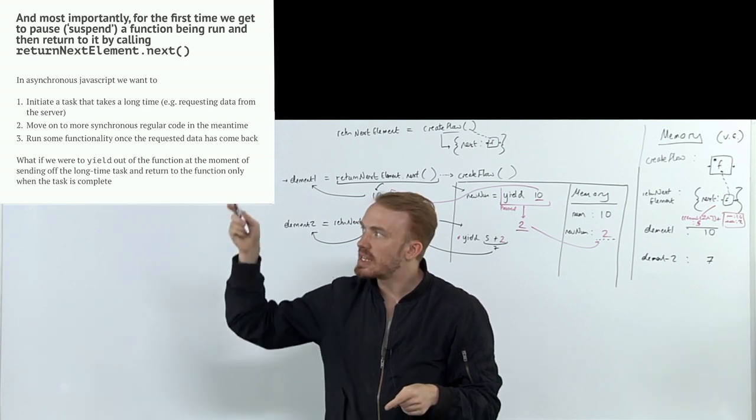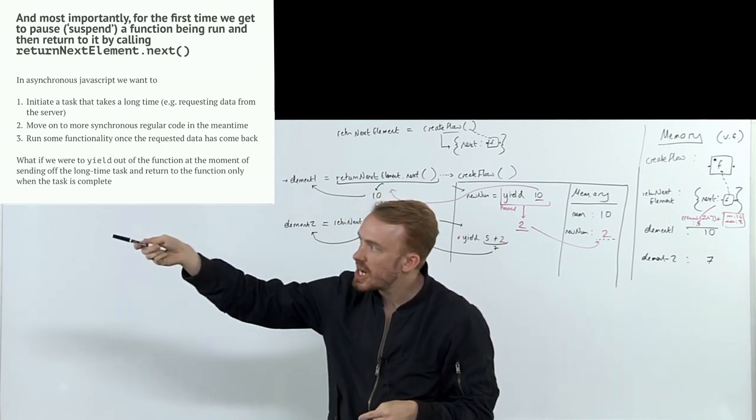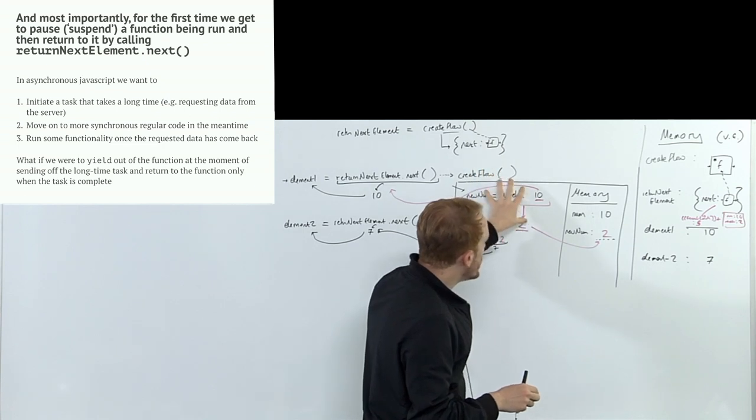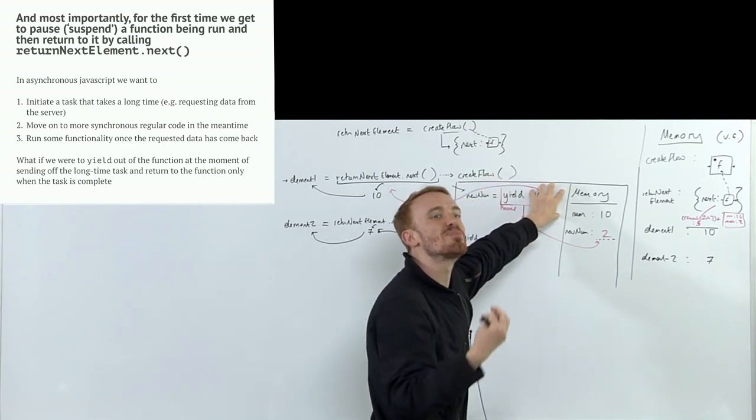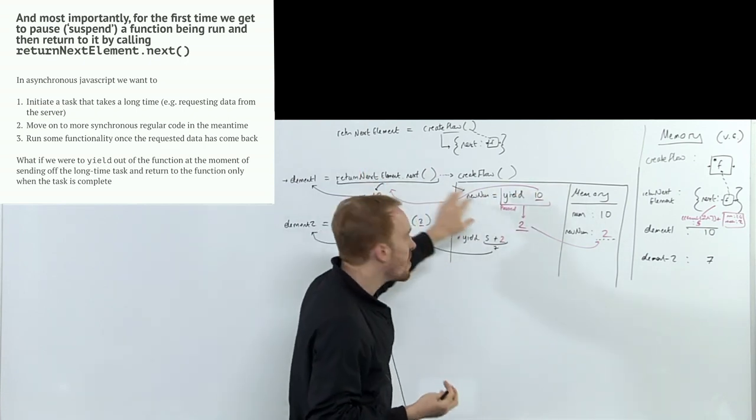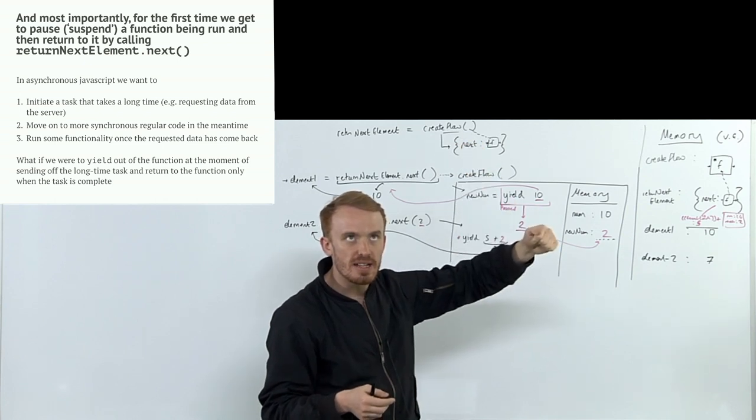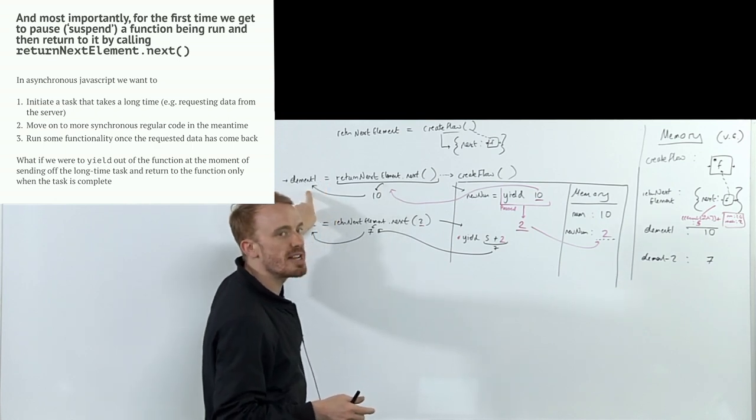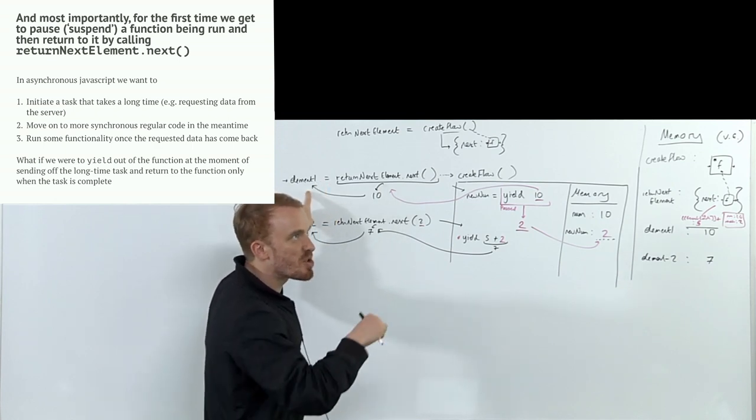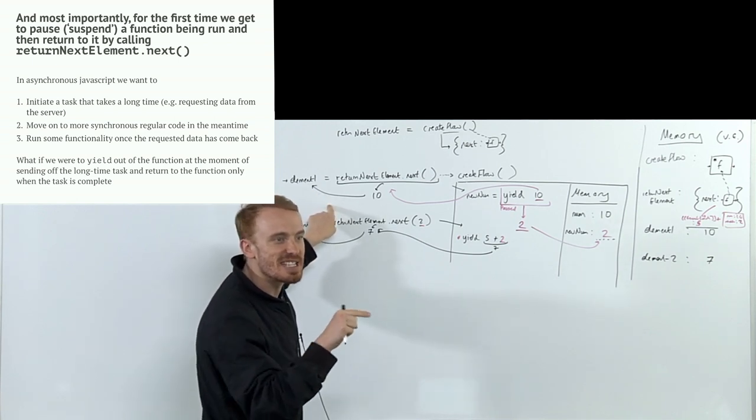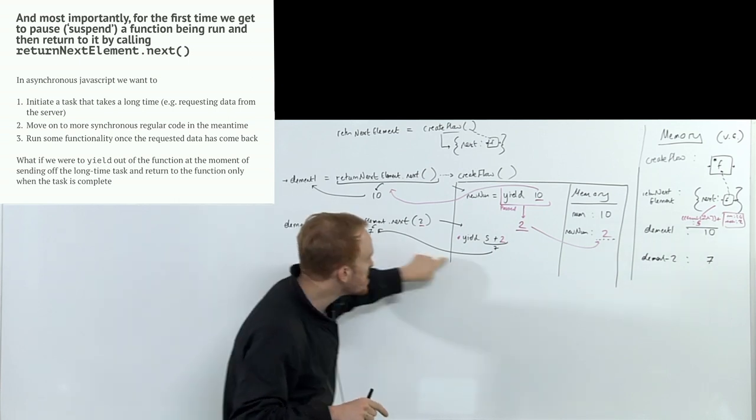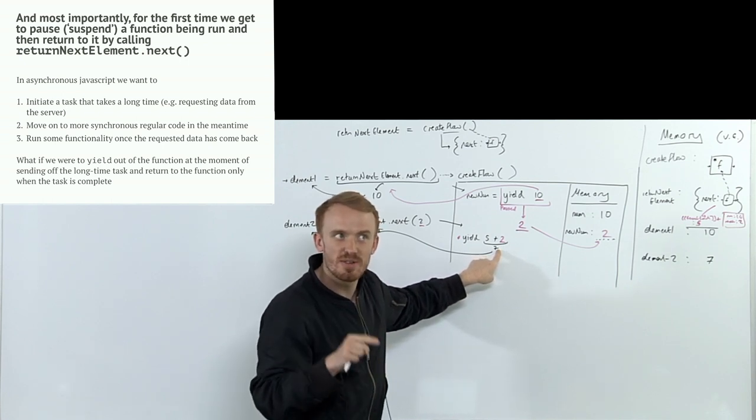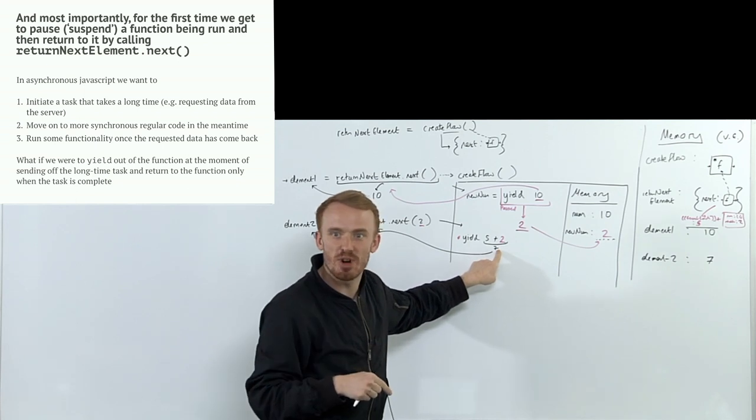So what if we could use that to handle asynchronicity? We could initiate a task that takes a long time, for example requesting data from a server, set it up, use the yield keyword to have that return promise object be stored out here in some way and throw us out of the execution context. Then continue running through our code, including attaching some functionality to be auto-triggered when that promise gets its value back. And what if that triggered functionality inside of it contained a call to next that took us back in to continue running our code, with its value being passed back in, the value from the returned request, the response object that came back into the promise value.